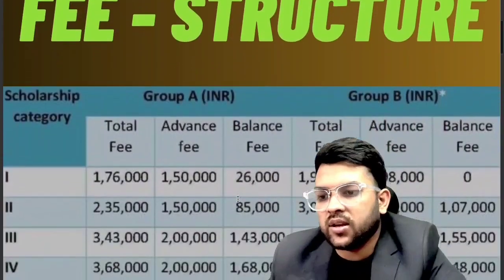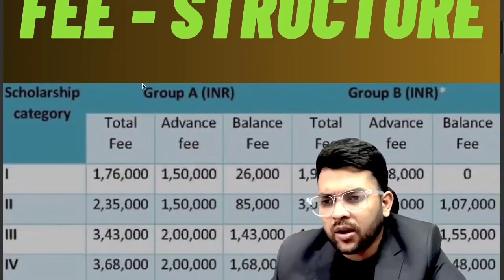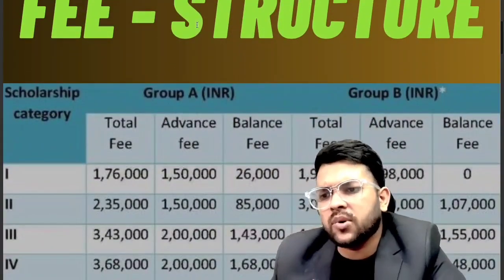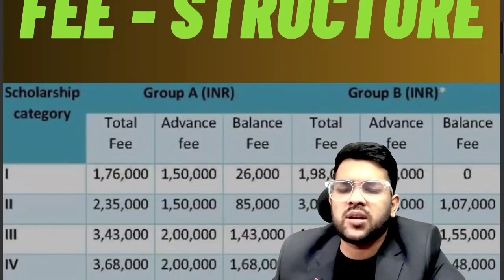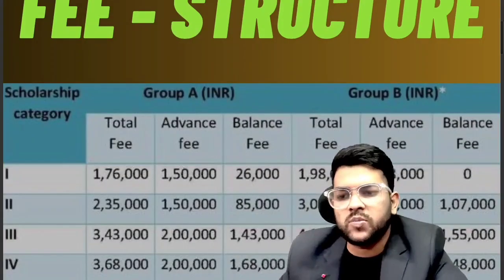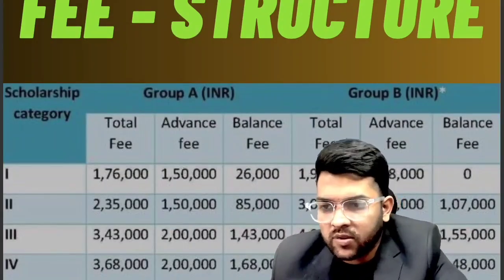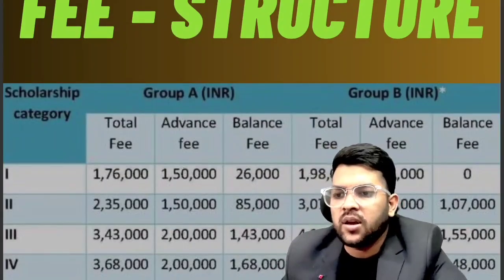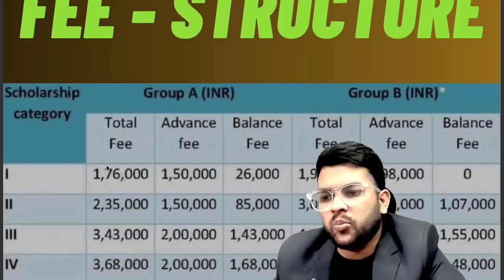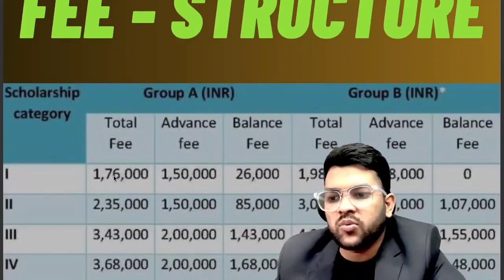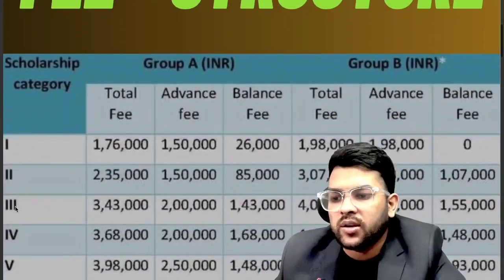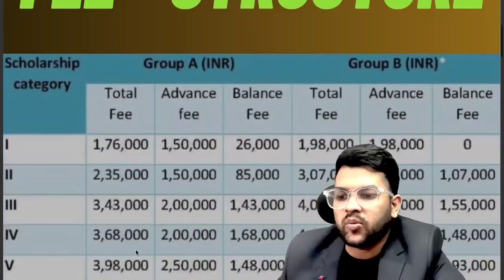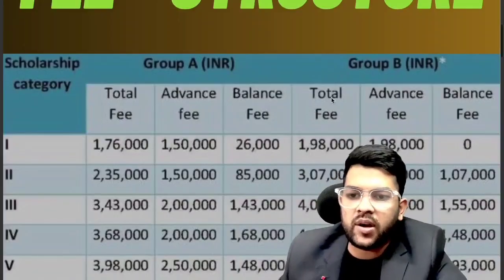For the fee structure, branches are divided into Group A and Group B. Group A fee is 1,76,000 for Category 1, and Category 2 is 2,35,000. Similarly for Category 3, 4, and 5, you can check on the screen.